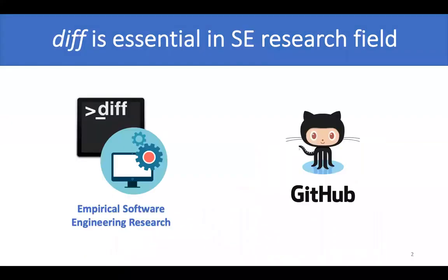In empirical software engineering research, diff is commonly used in various topics. Along with the growth of GitHub, recent studies analyze software changes extracted from git repositories by using the git command, for example, git-diff.